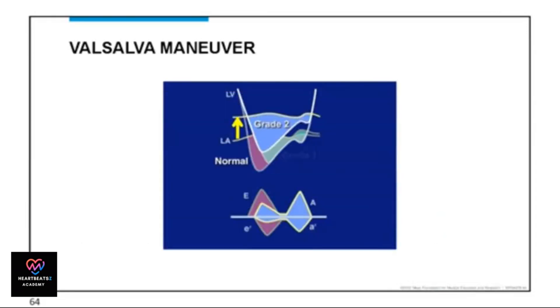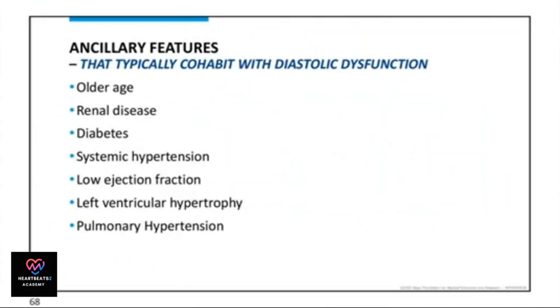The Valsalva maneuver and mitral annulus TDI are useful in evaluating the E-wave. Ancillary features and conditions can affect diastolic function assessment.